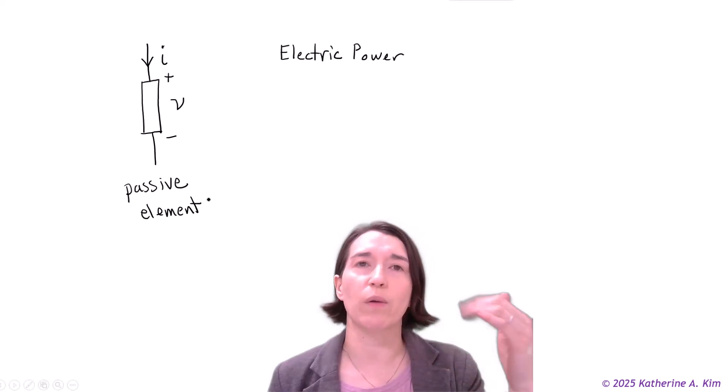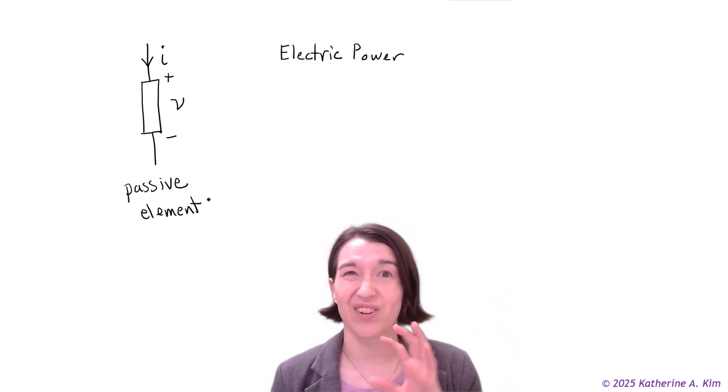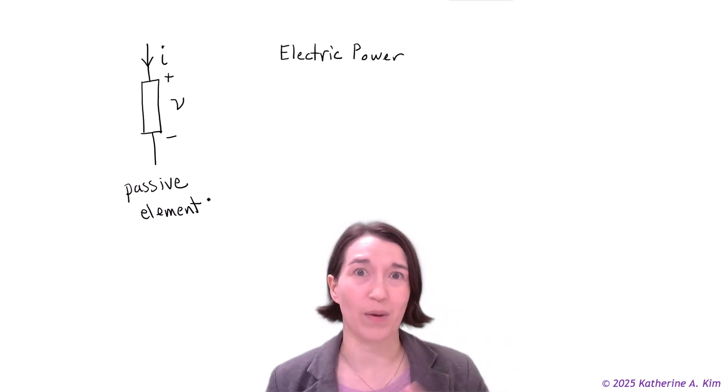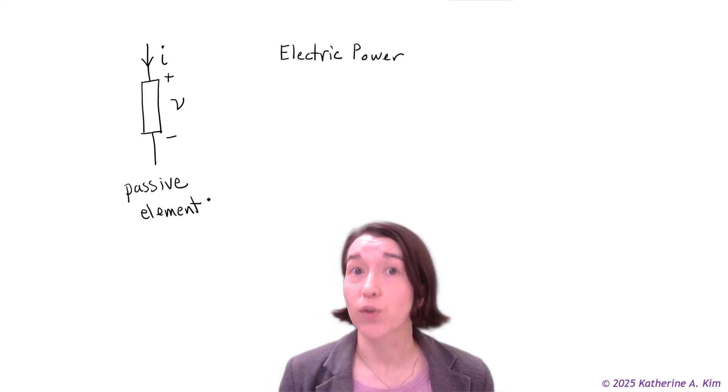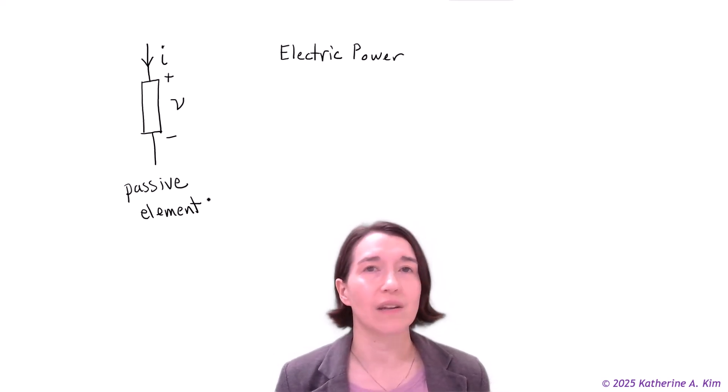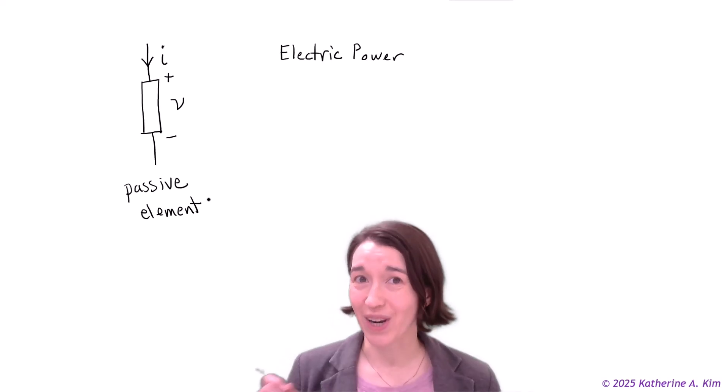This has to do with the way we define it. Note that this current can technically be negative but the way it's normally operating it would be a positive one. So we have a passive element here. If we want to know the power absorbed by this we need the electric power equation.